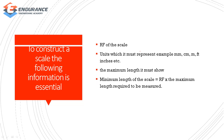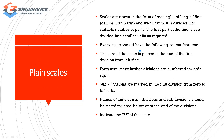To draw a scale, we first determine the RF factor, then represent the unit. For example, 1cm represents a certain measurement. We note the maximum and minimum length. The scale is in the form of a rectangle. We determine sample length and width, divide it into a number of parts, and subdivide the parts of the line. We then indicate the name and the RF for the scale.